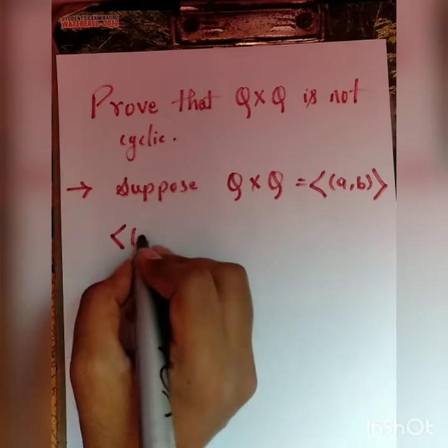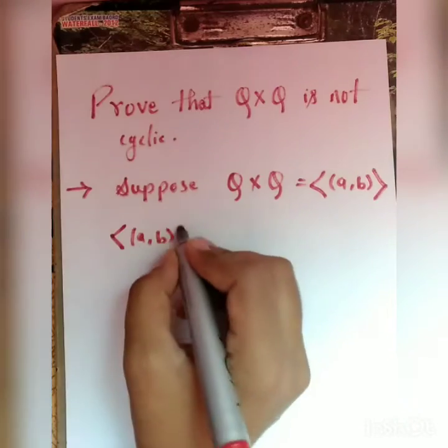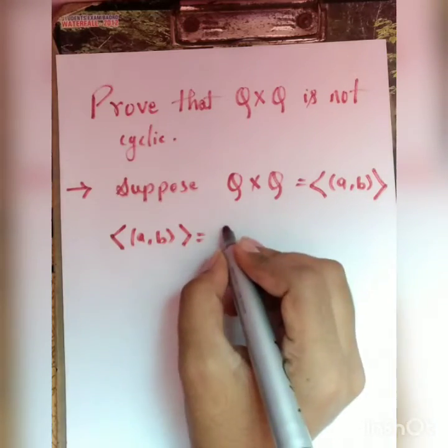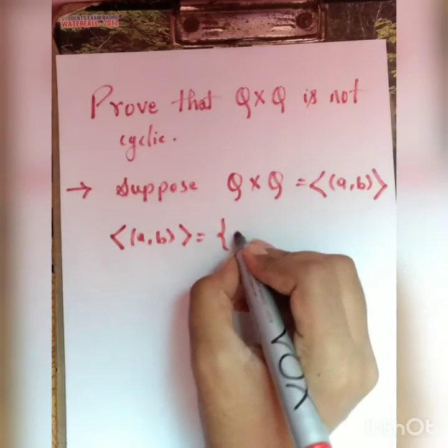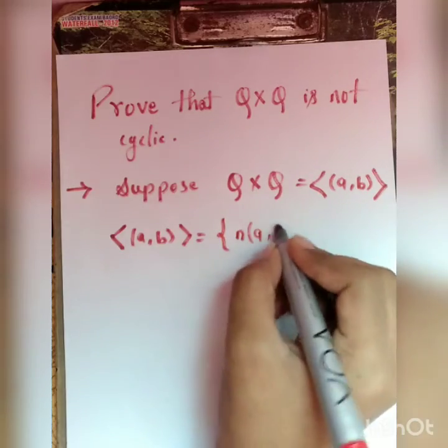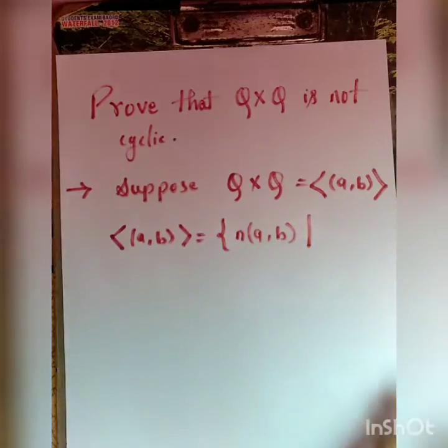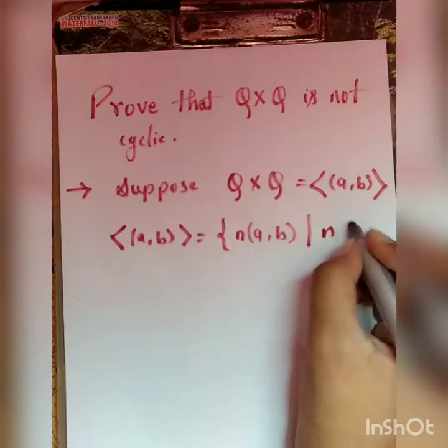Then we have ⟨a, b⟩ equal to set of all n(a, b) such that n is an integer.